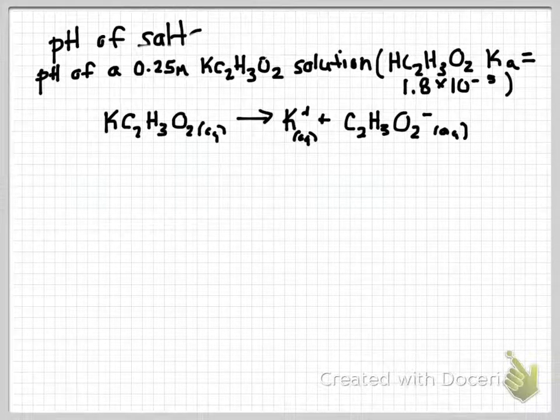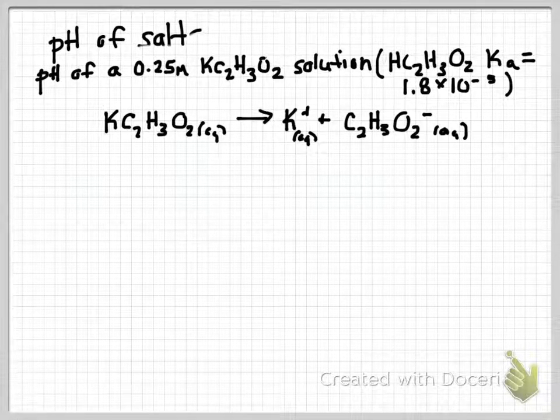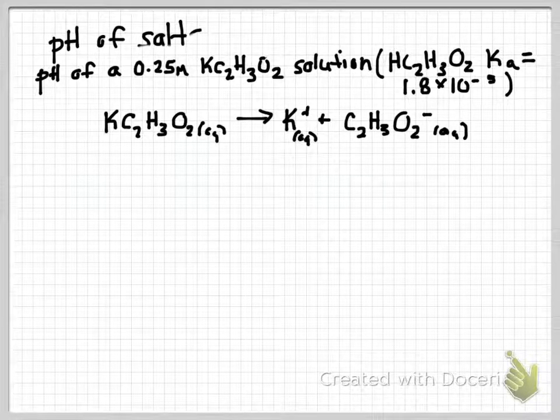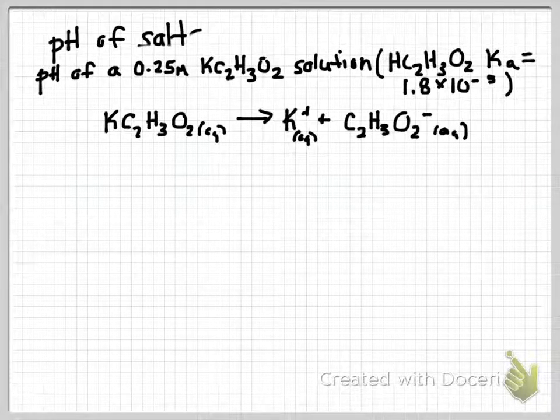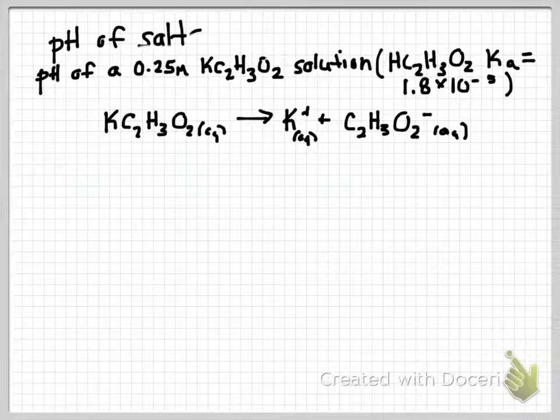Whenever you're looking at a salt solution, we first want to look at the dissociation reaction of our salt. So assuming this is a strong electrolyte, which it is, my potassium acetate will completely dissociate into potassium cations and acetate anions.